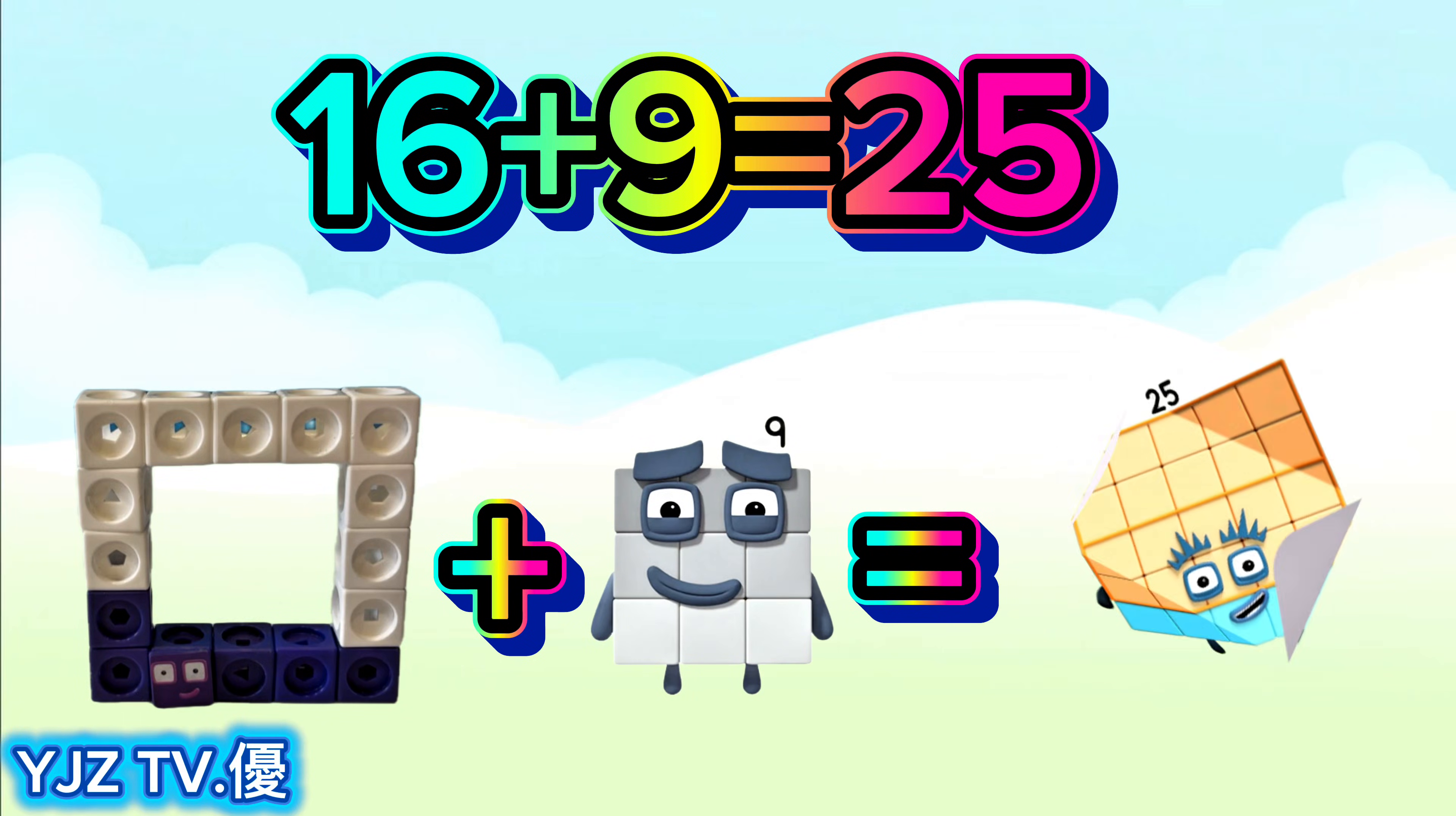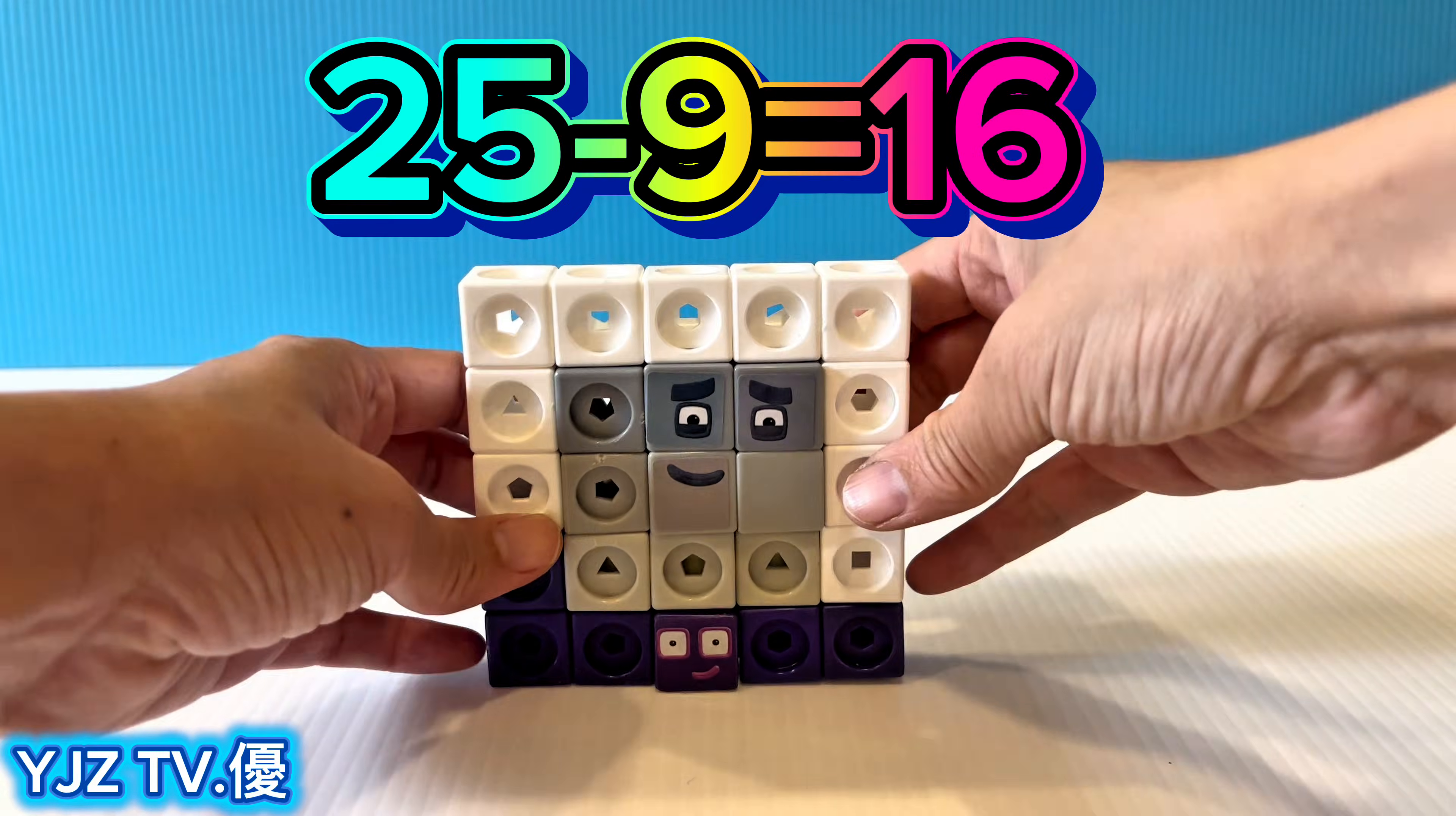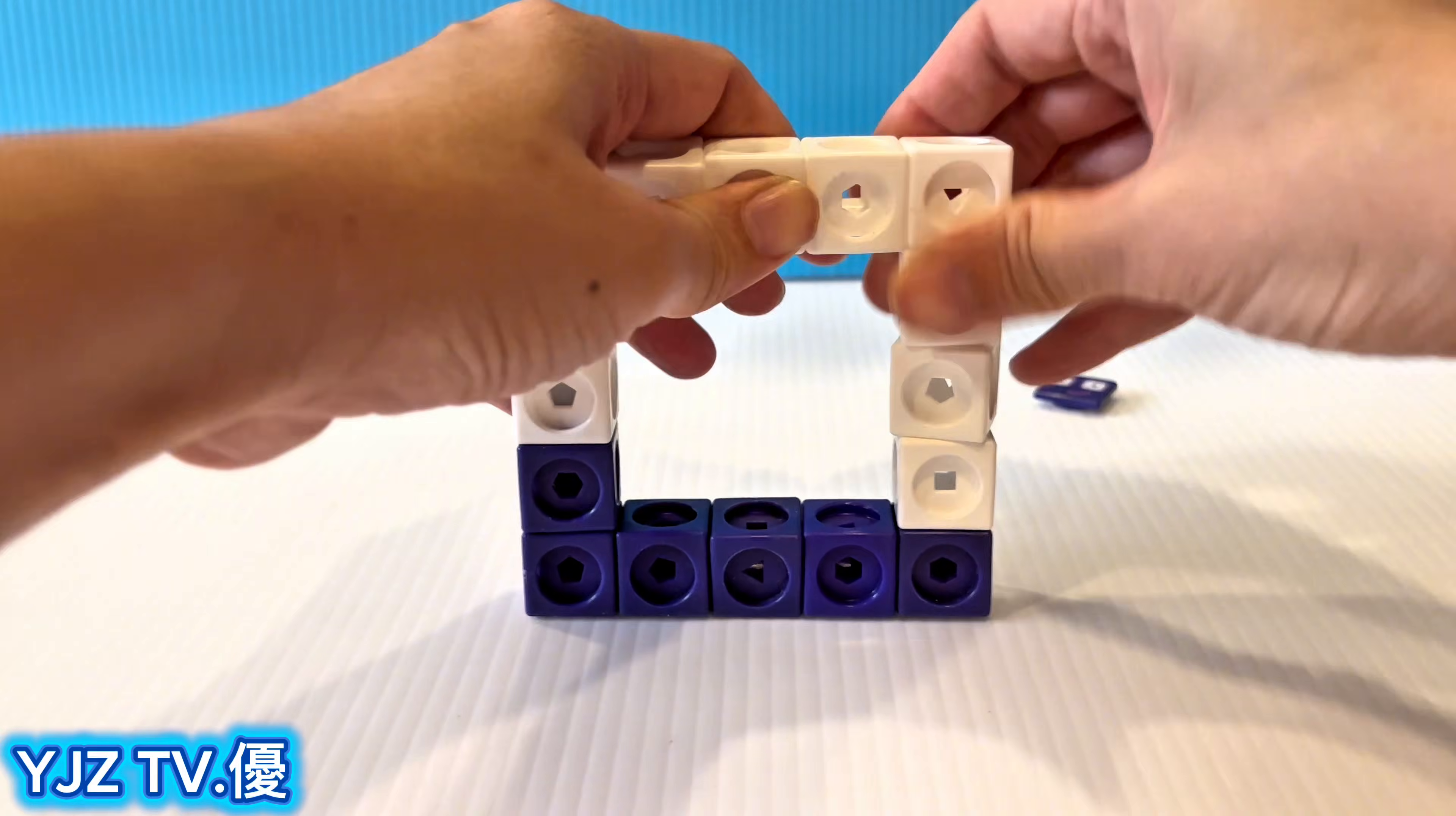16 plus 9 equals 25. 25! 25 minus 9 equals 16. I am 16!